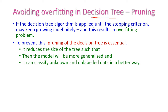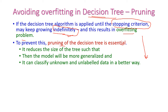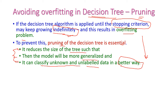Next, let us see the overfitting problem in decision tree. If we apply the decision tree algorithm continuously until the stopping criterion, the overfitting problem will occur — the tree will grow indefinitely. To avoid overfitting, we need to prune the decision tree whenever required. Pruning reduces the size of the decision tree, making the model more generalized so it can correctly classify unknown and unlabeled data.